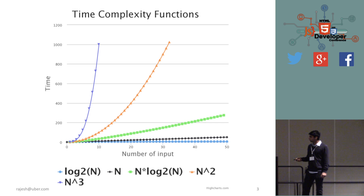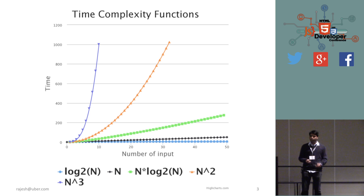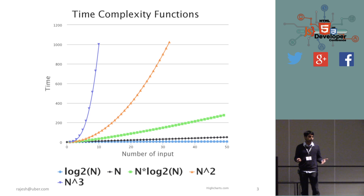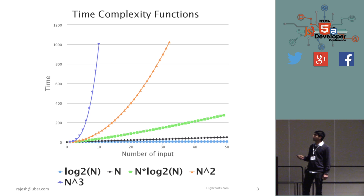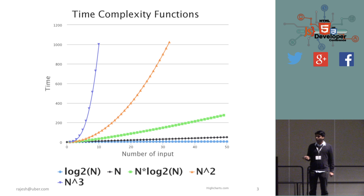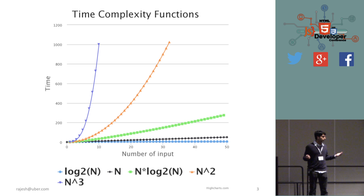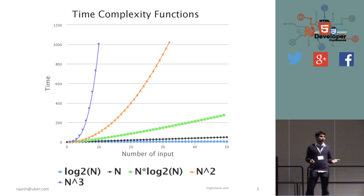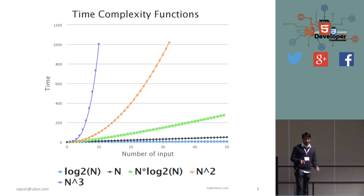For n-cubed, at 10 it's 1,000. If we plotted n-cubed for 50, that's about 125,000. To really plot that on this slide, I estimate it would be around 60 floors of this building. So that's really, really a lot different from what we see in log n. That's why log n is really, really important and that's why we care about it.